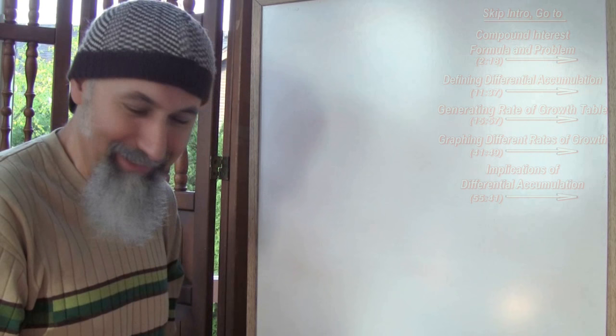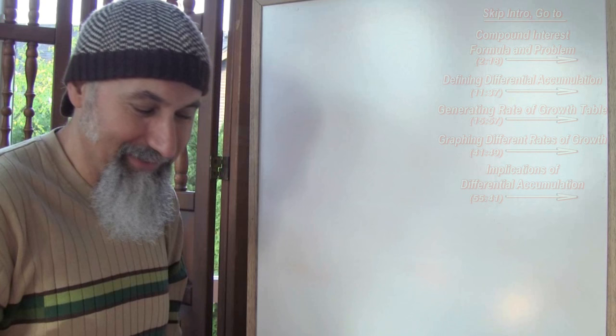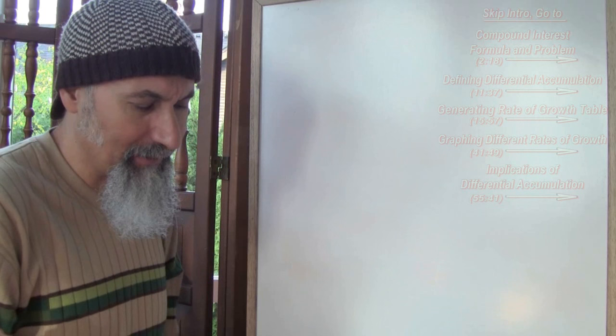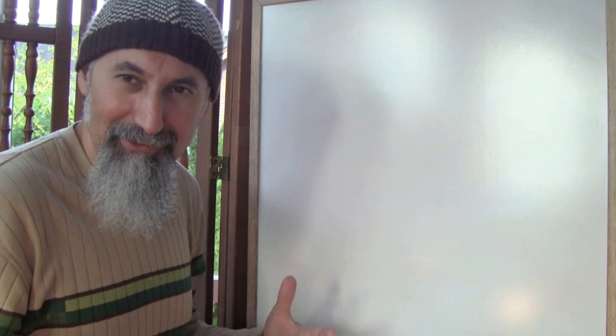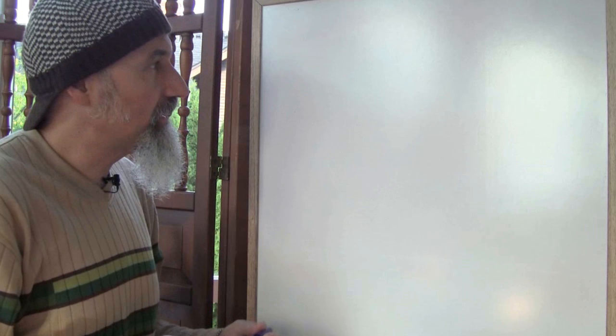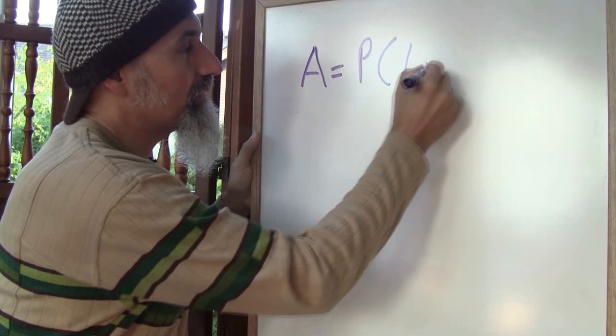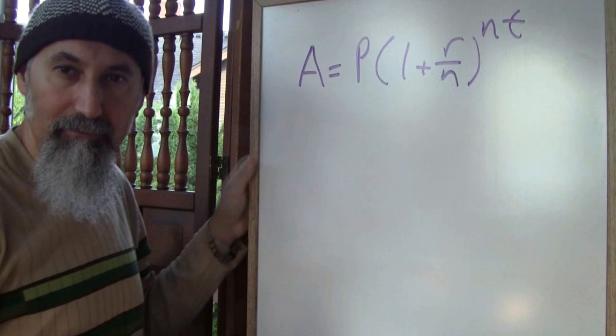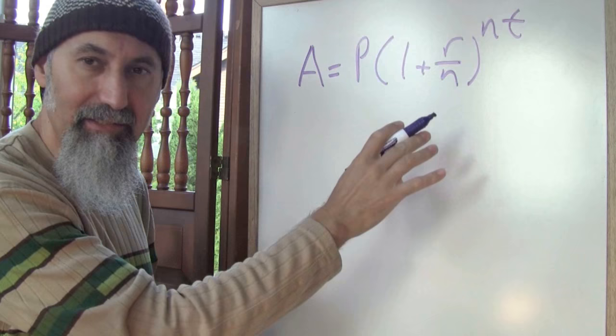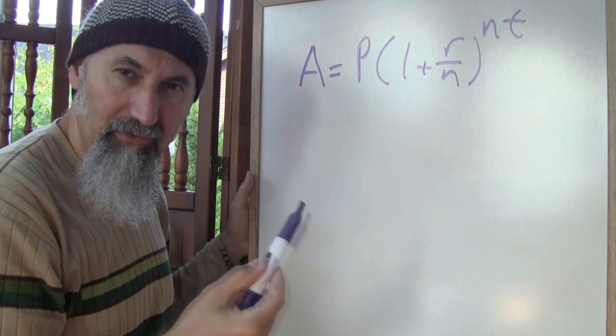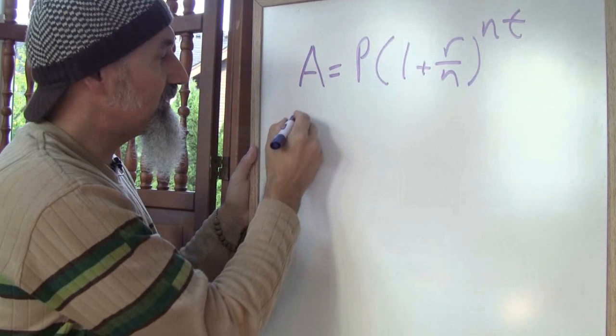We'll talk a little bit about what the growth rate tells us about our economy and how the system is laid out. One of the first formulas you would have encountered in high school math is the growth rate formula: A = P(1 + r/n)^(nt). If you've done grade 10 or 11 math, you would have seen this. These are all just variables — things we can plug numbers into depending on the situation.